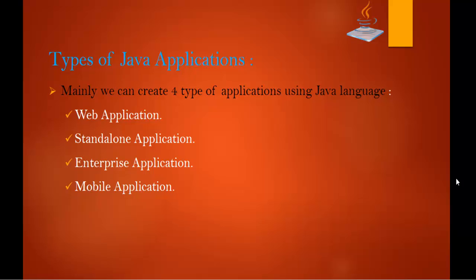Finally, coming to mobile applications. In today's world it is all about mobile — everything runs on mobile. Using Java we can build mobile applications too. A mobile application is an application created especially for mobile devices. Currently, we use Android and Java technologies for building mobile applications. To build all these applications, we use Java as the core language.